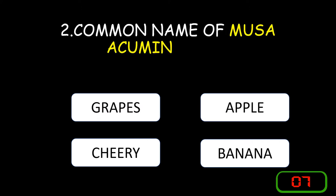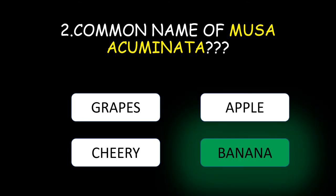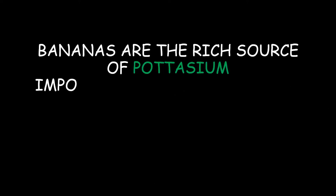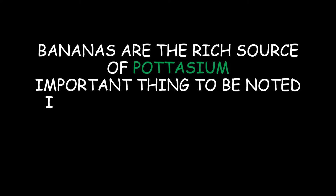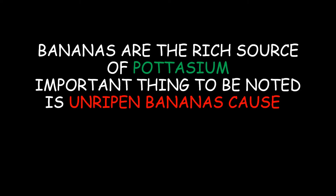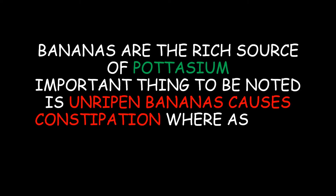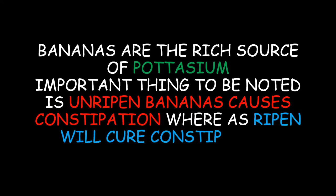The common name of Musa acuminata is banana. Bananas are a rich source of potassium. An important thing to note is that unripened bananas cause constipation, whereas ripened bananas will cure constipation, so try to avoid unripe bananas.